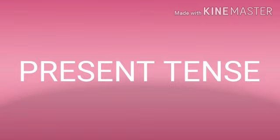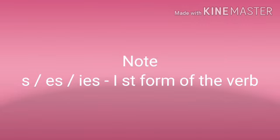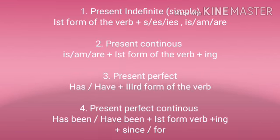First one is present tense. Note: S-E-S, I-E-S — first form of the verb. Present indefinite: first form of the verb plus S-E-S or I-E-S, or is/am/are. Present continuous: is/am/are plus first form of the verb plus I-N-G. Present perfect: has/have plus third form of the verb. Present perfect continuous: has been/have been plus first form of the verb plus I-N-G plus since/for.